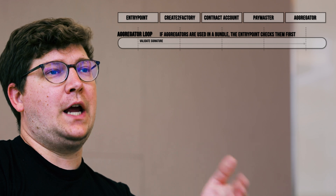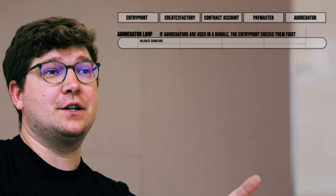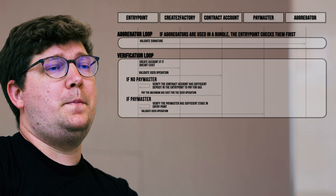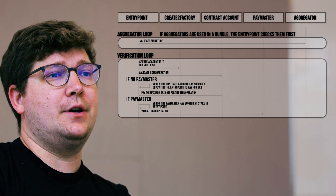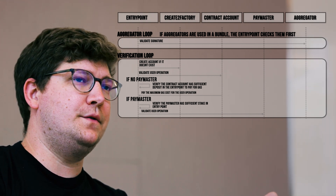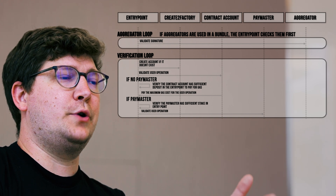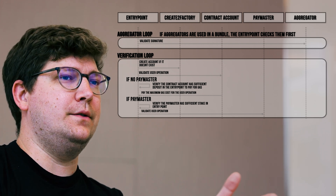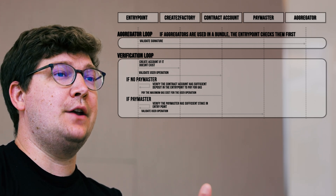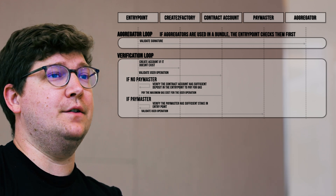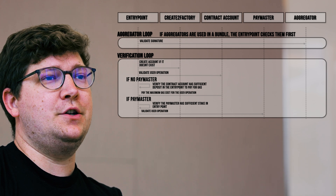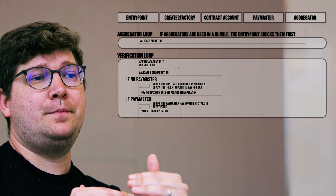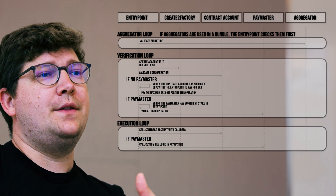Once verification of the signature has happened, if a paymaster is used, the entry point will verify that the paymaster has enough ETH or native token to pay the gas. Alternatively, it will check that the sender itself has enough native token or ETH to pay for the user operation. Once that is complete, that's the end of the verification loop and it moves to the execution loop.